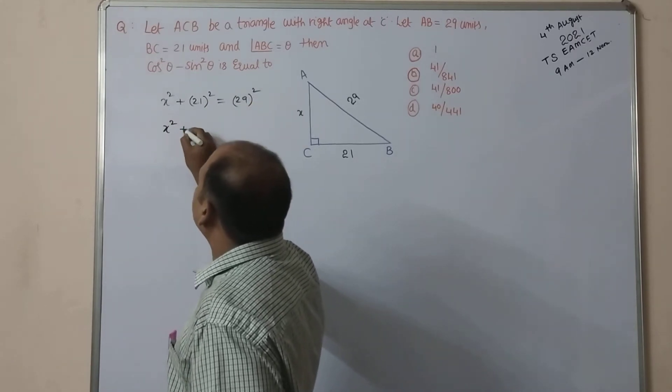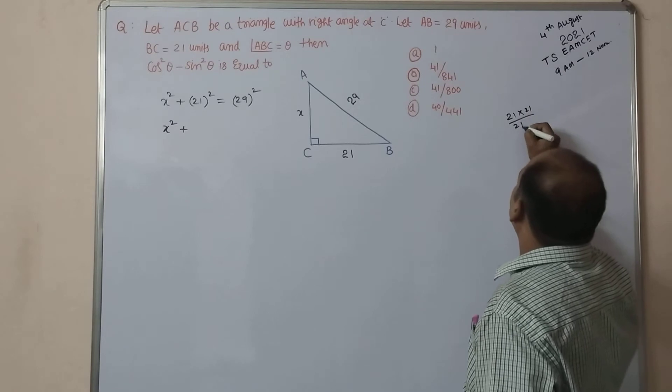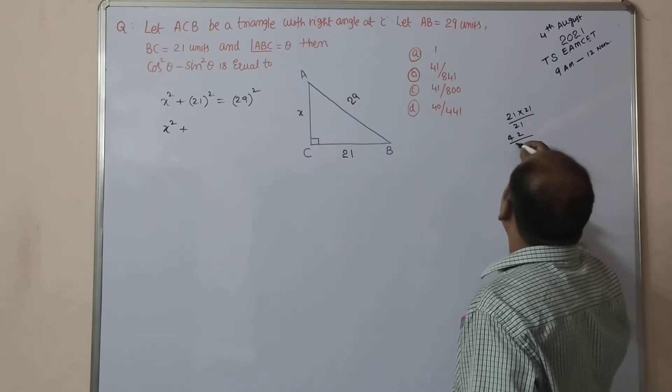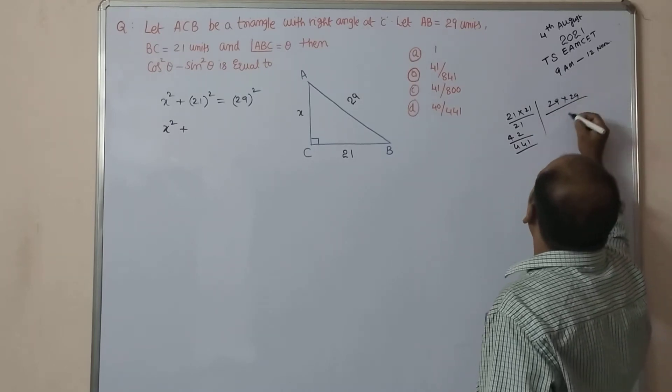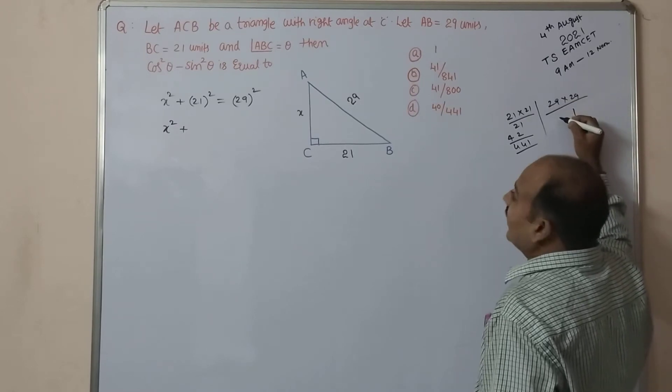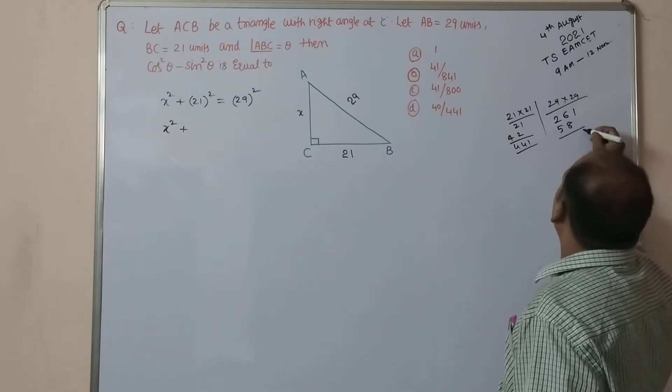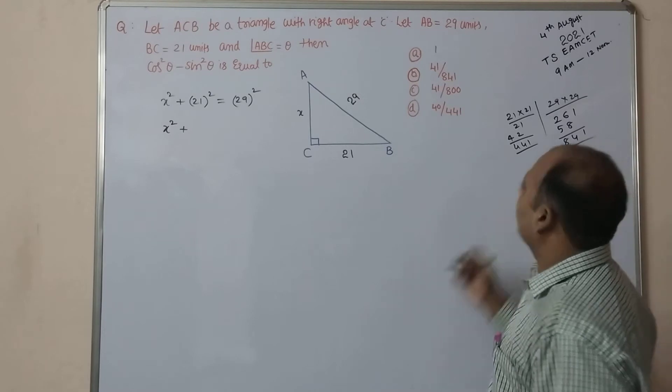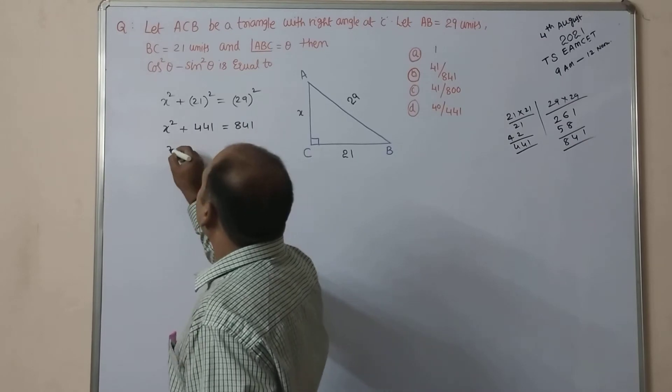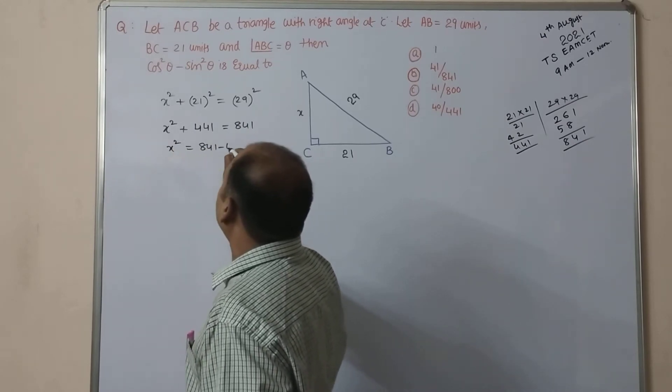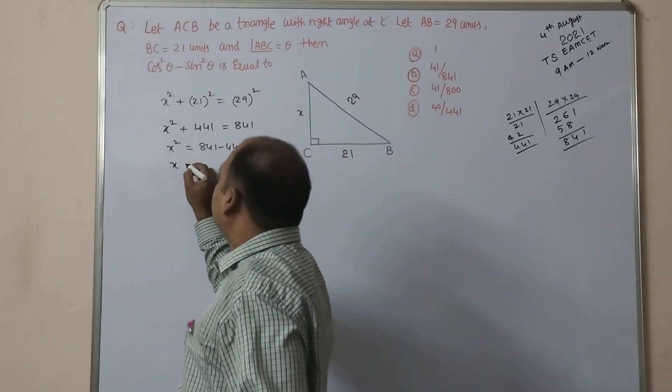X² + 21², 441, 21 square is 21 into 21, so 441. Similarly 29 into 29, 9×9 is 81, 9×18 plus 8 is 26, 58, 1, 4, and 8, 841. So 441 here is equal to 841. X² is equal to 841 minus 441 which is equal to 400. X² equal to 400, so X is equal to 20.